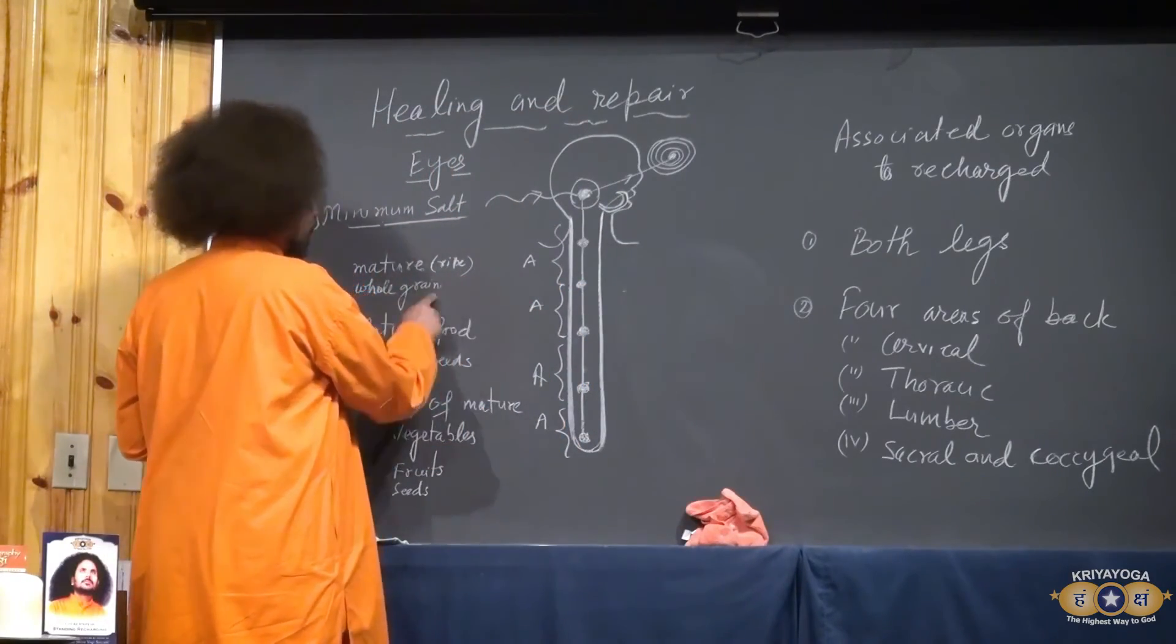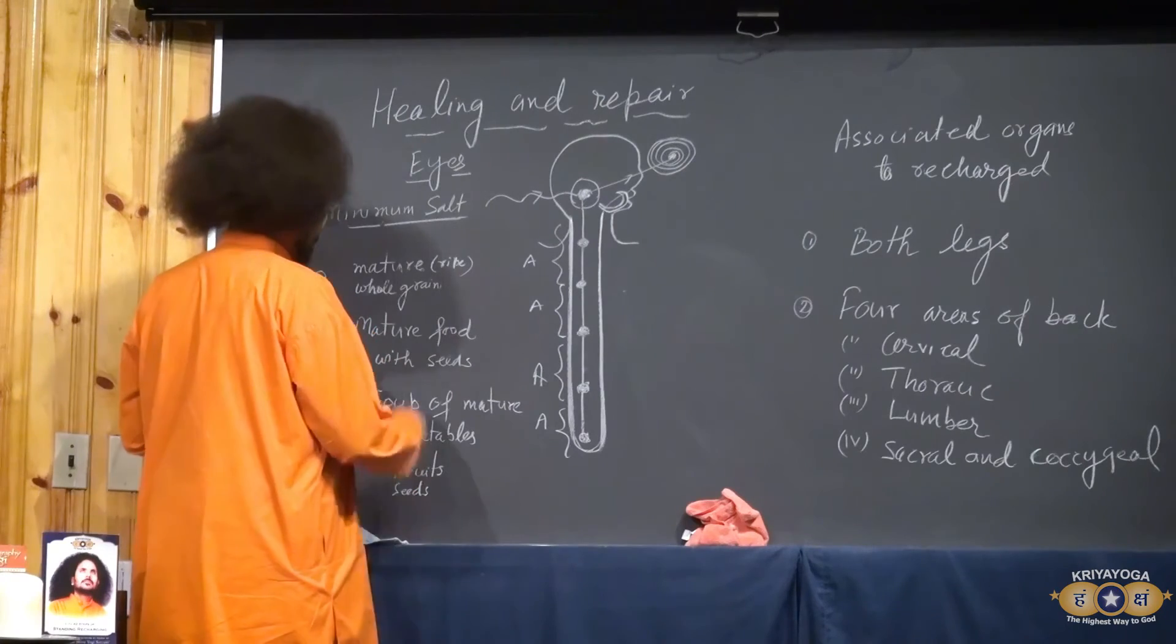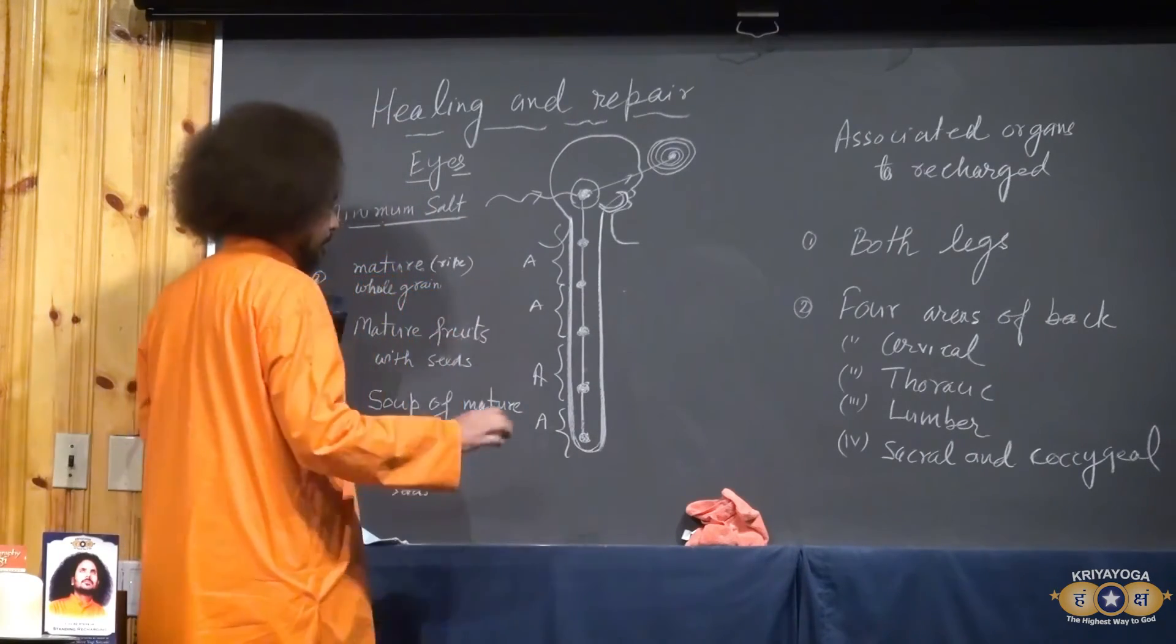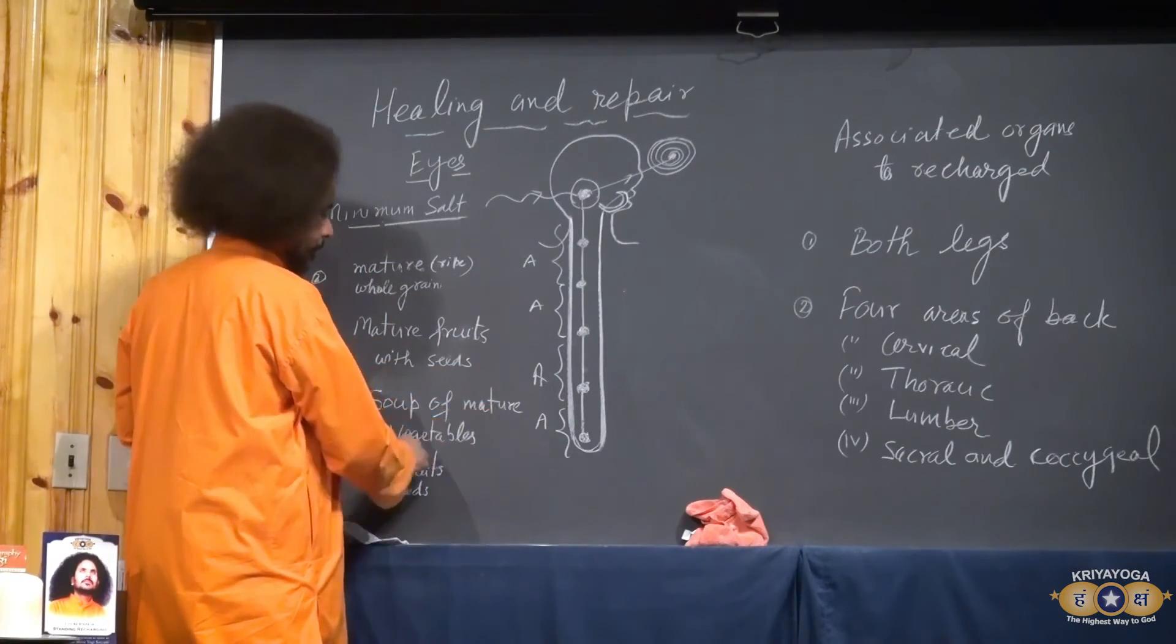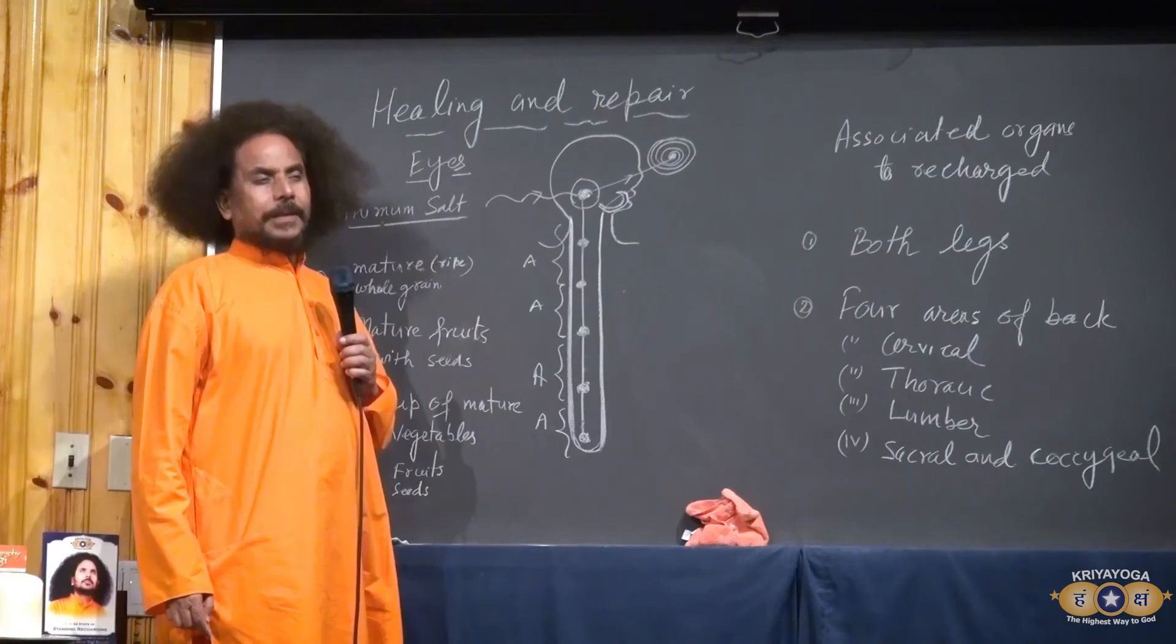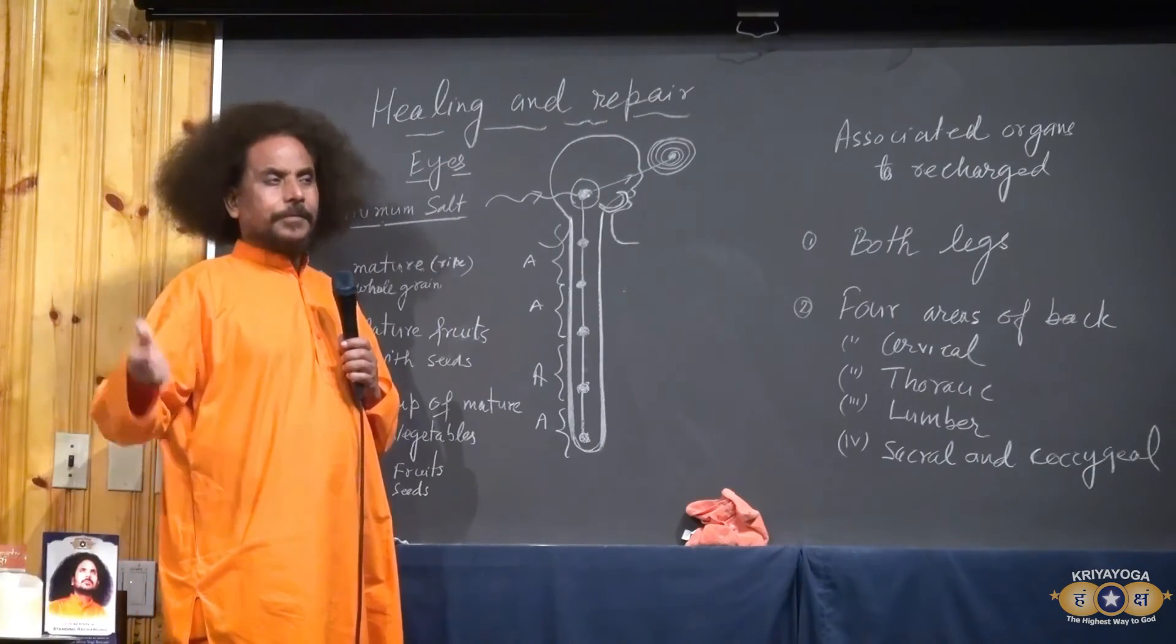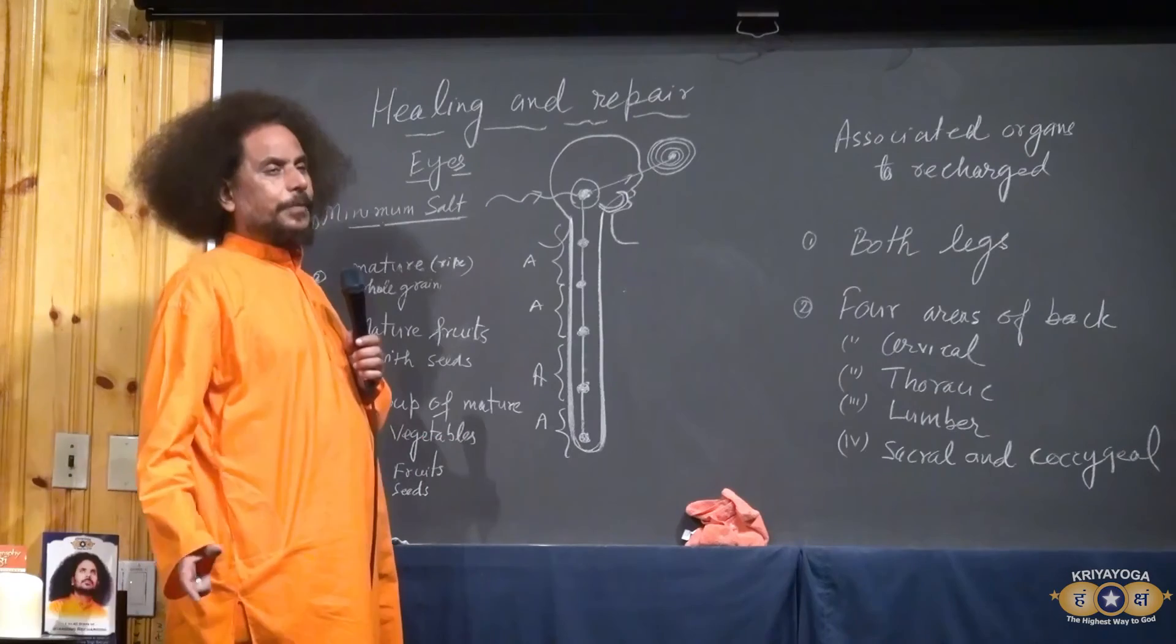Then when you are eating the mature and whole grain, and mature food with seeds. Mature fruits. Any kind of fruits which should be mature. What is the meaning of mature? And collect the seed and so you will get the tree. Mature fruits with seed. Soup of mature vegetables. What is mature vegetables? Like garlic, onion, turmeric and cassava, sweet potato, potato. And you can find out others. There are few more.